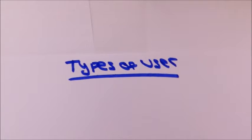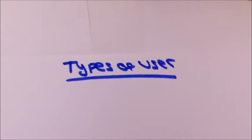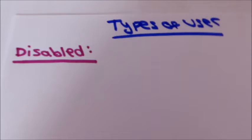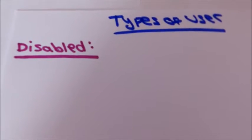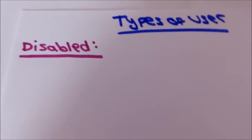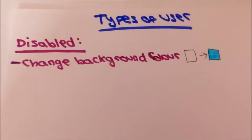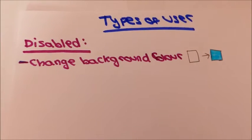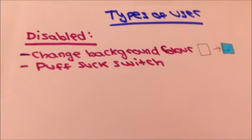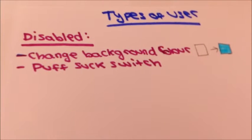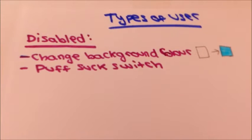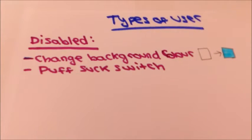We're now going to discuss the different types of users that could use the HCI and the different requirements that they may require. If someone is disabled, then they're going to have different requirements. Some of these include changing the background color, the use of correct color schemes to help people who have dyslexia, a puff suck switch.